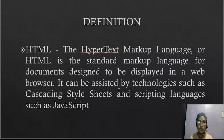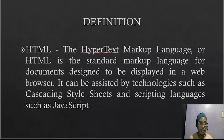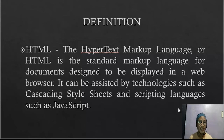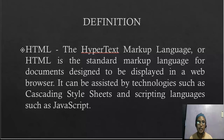HTML stands for Hypertext Markup Language. It is the standard markup language for documents designed to be displayed in a web browser. It can be assisted by technologies such as Cascading Style Sheets and scripting languages such as JavaScript. The use of markup language is to give a logical structure — for example, tags in Sublime for HTML include paragraphs, headings, tables, labels, and code elements.